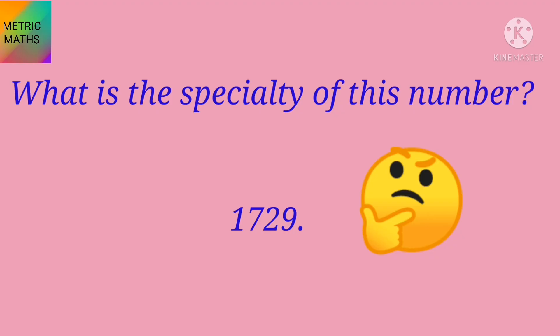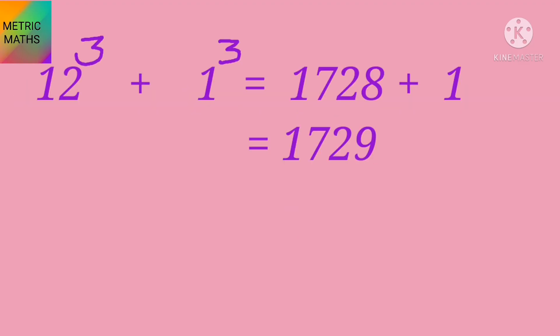Let's check. When we add the cubes of 12 and 1, that is 12 cube plus 1 cube, you will get the answer 1728 plus 1, that is 1729.